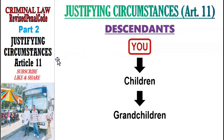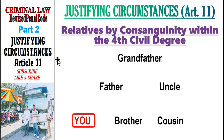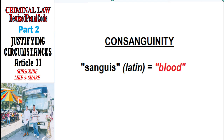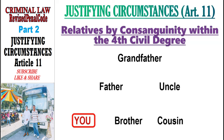How about Relatives by Consanguinity within the Fourth Civil Degree? Consanguinity comes from the Latin word meaning 'of blood,' so these are your blood relatives. To compute the degree, for example with your brother: find the nearest common ancestor, which is your father. From you to your father is the first degree, and from your father to your brother is the second degree. So your brother is your second degree relative by Consanguinity.